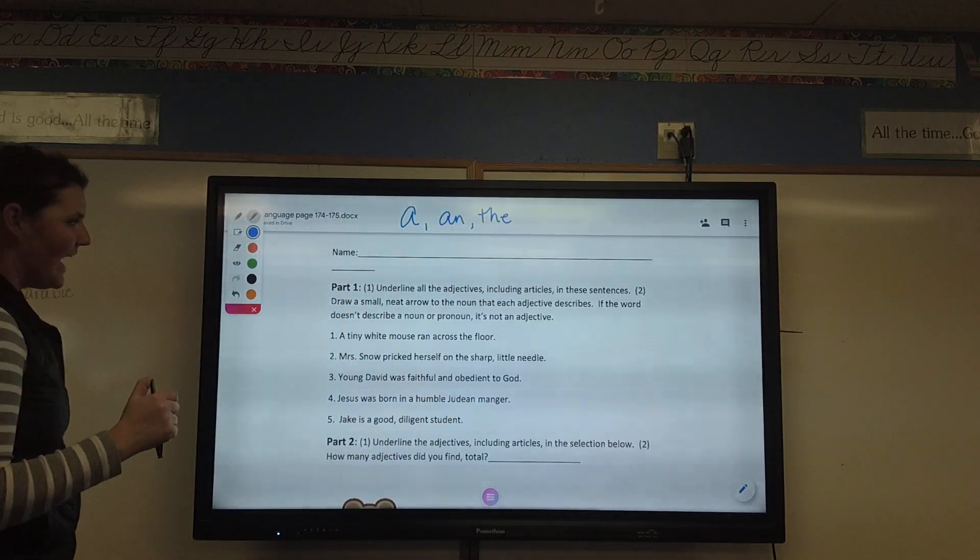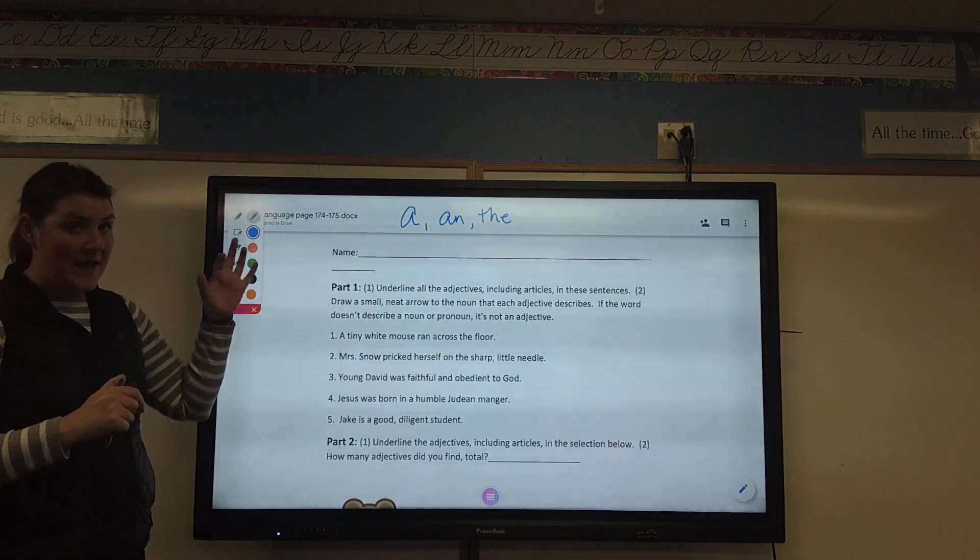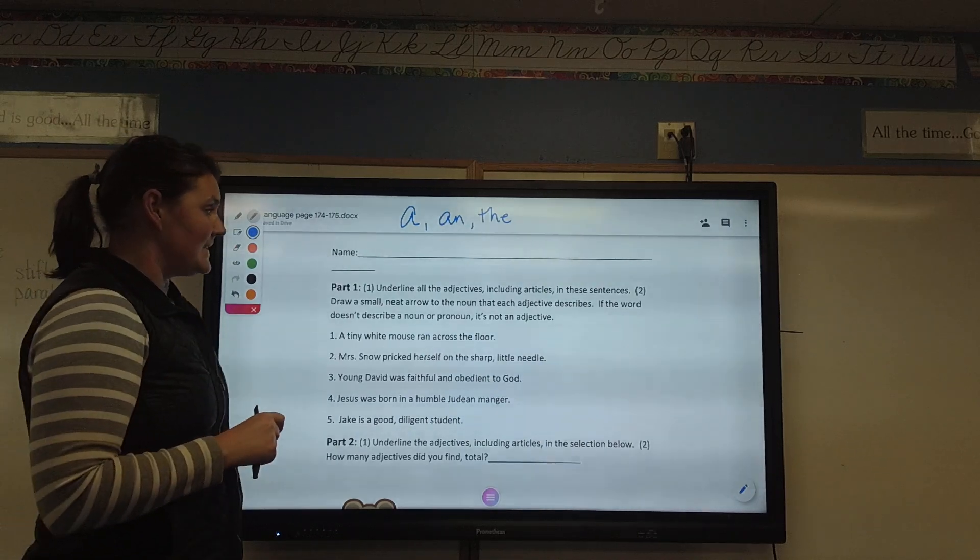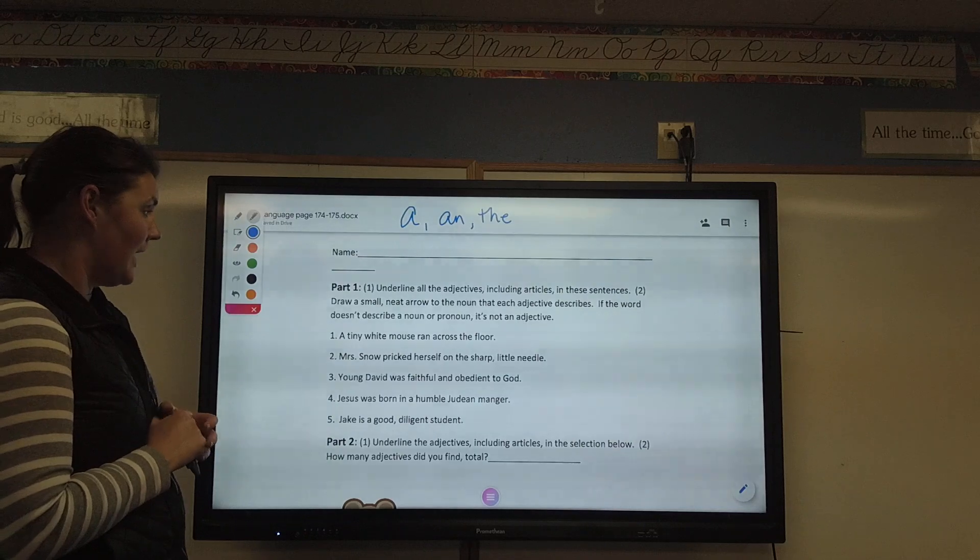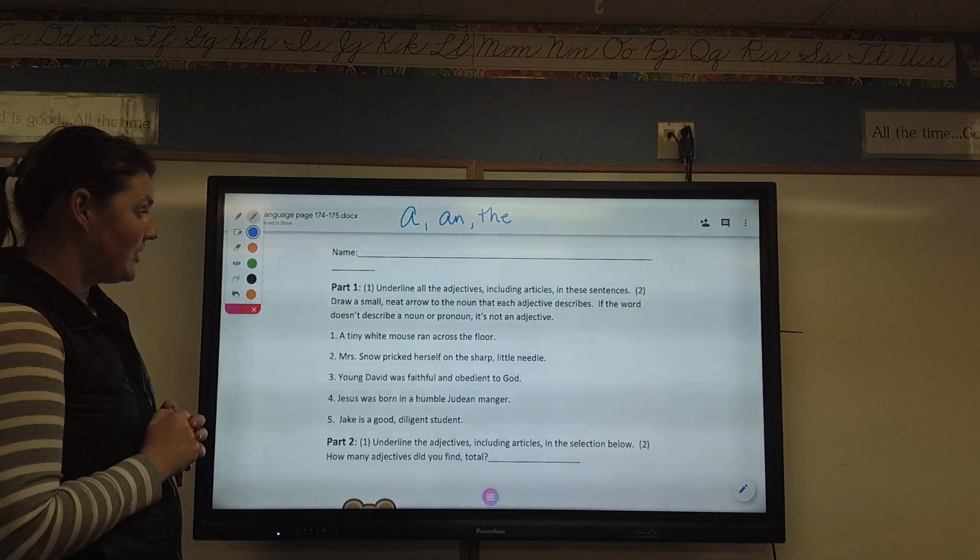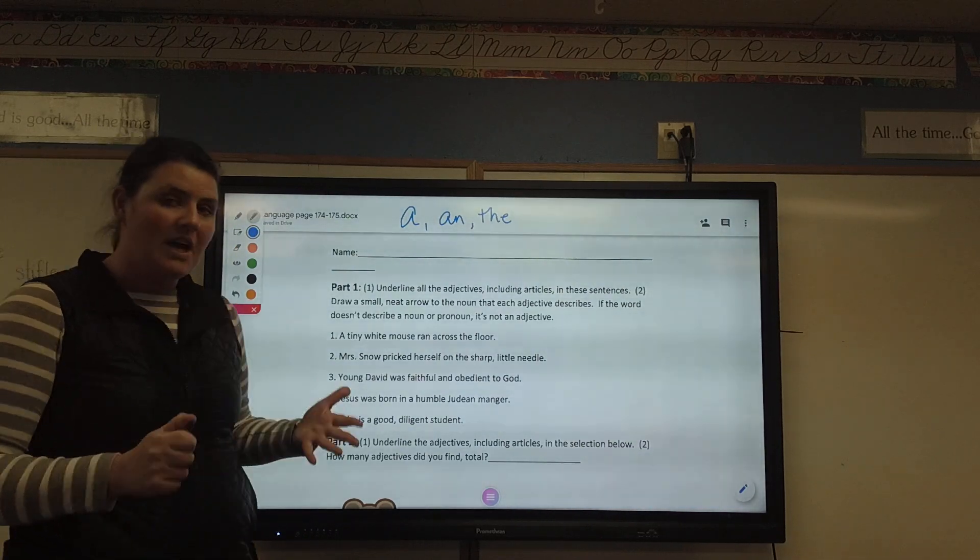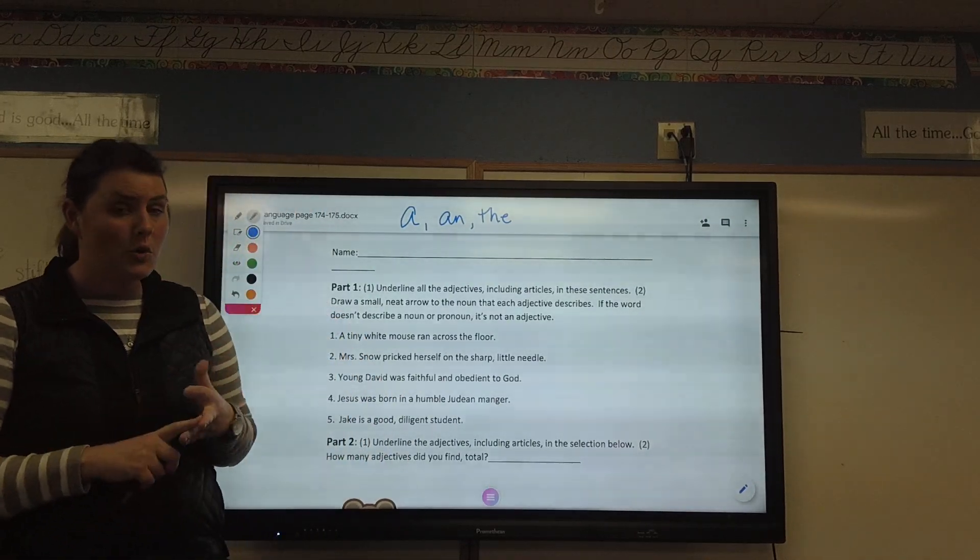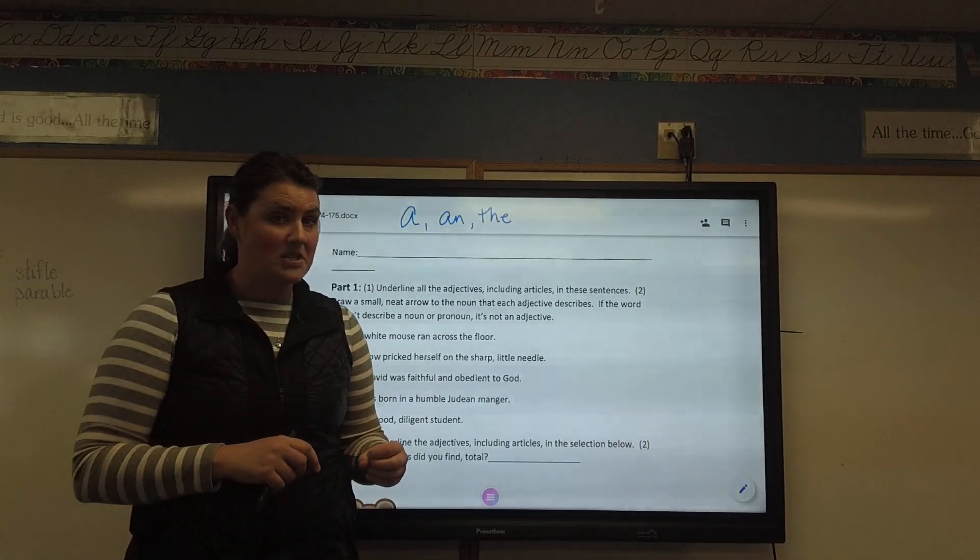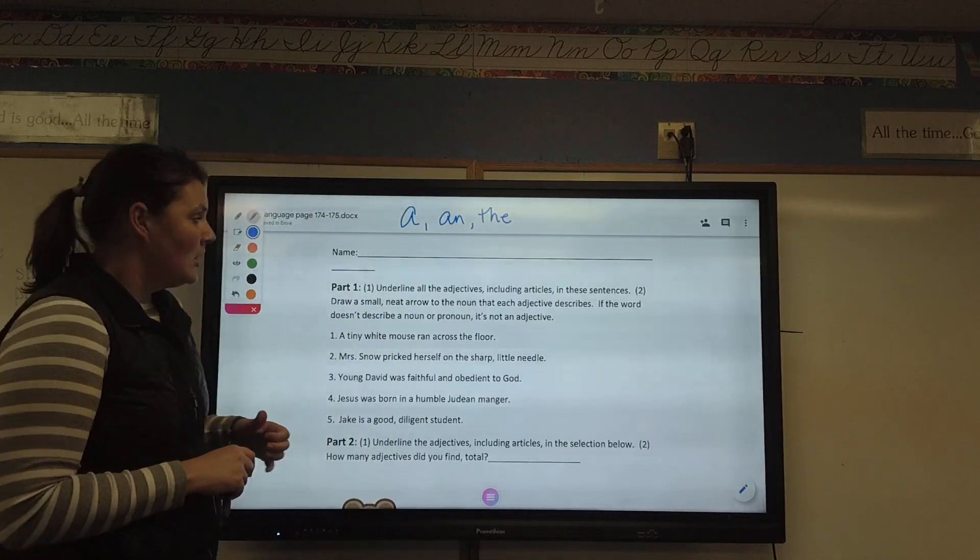In part one, underline all of the adjectives, including the articles. That's what a, an, and the are. We call them articles in these sentences. Draw a small, neat arrow to the noun that each adjective describes. If the word doesn't describe a noun or a pronoun, it's not an adjective. Remember those questions like how much, how many, whose, what kind. Those adjective questions that we've been talking about.